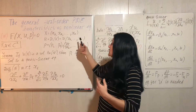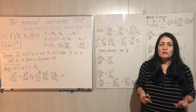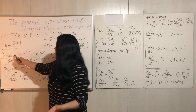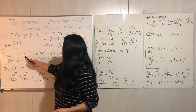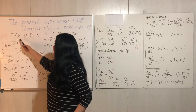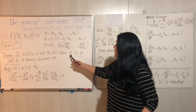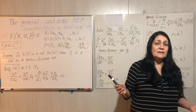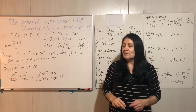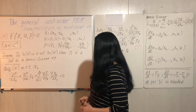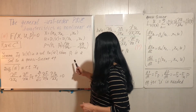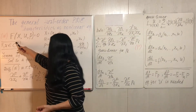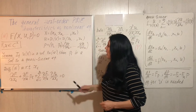To relate this to something we already know: the first small statement is that if u(x) is a solution to our general equation, then pi is a solution to a quasi-linear equation. Quasi-linear equations were discussed in the previous lecture, so now let's see how we can derive a quasi-linear equation for pi by differentiating our main equation with respect to xi.